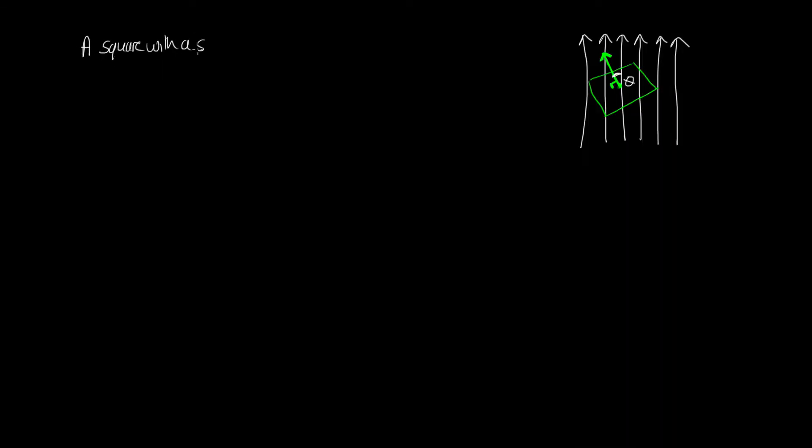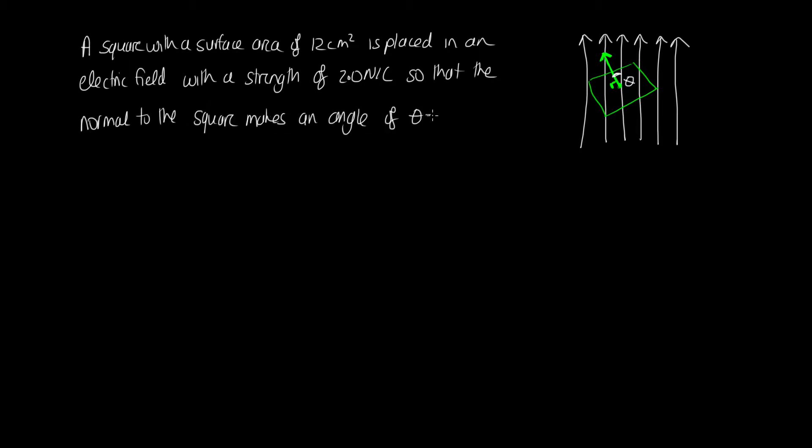So this first example. A square with a surface area of 12 centimeters squared is placed in an electric field with a strength of 2.0 newtons per coulomb, so that the normal to the square makes an angle of 30 degrees with the electric field as shown in the diagram. What is the electric flux through the square?